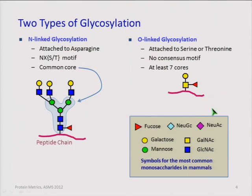The other major type of glycosylation is O-linked glycosylation, linked through the oxygen on serine or threonine. There's no consensus motif — there are motif-like things with a lot of serines and prolines in mucin-type domains — and there are many cores, so there's no one conserved core.